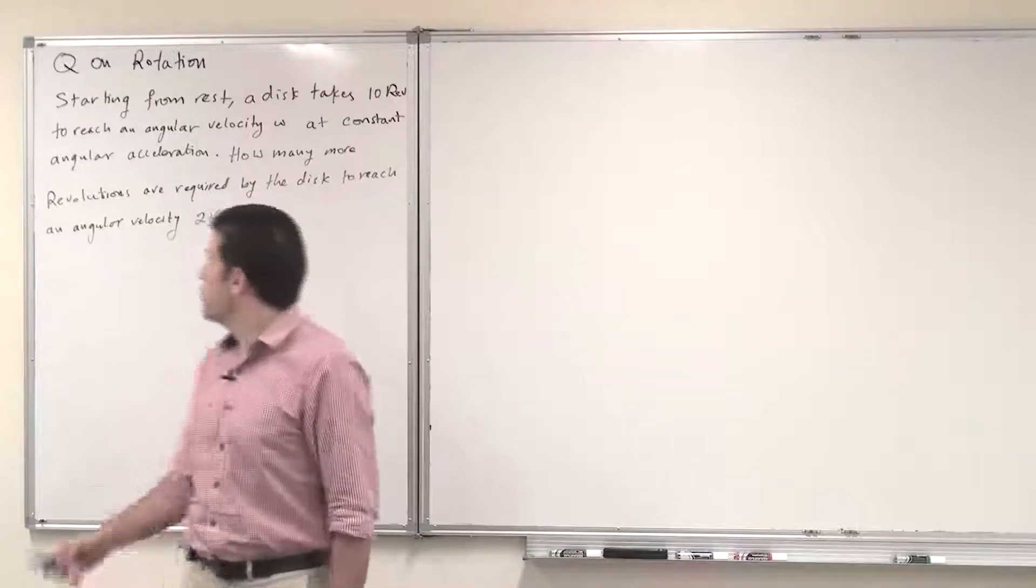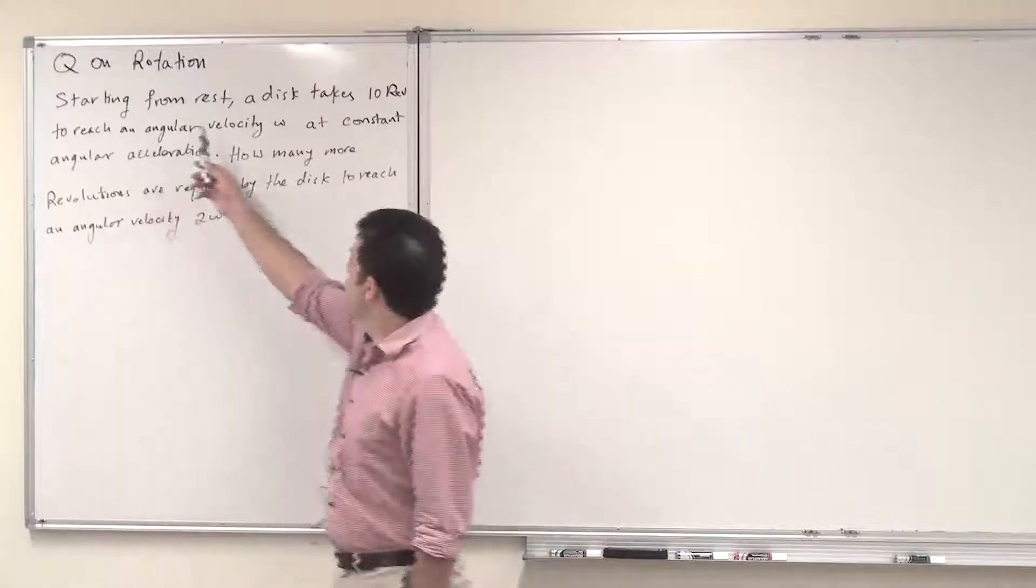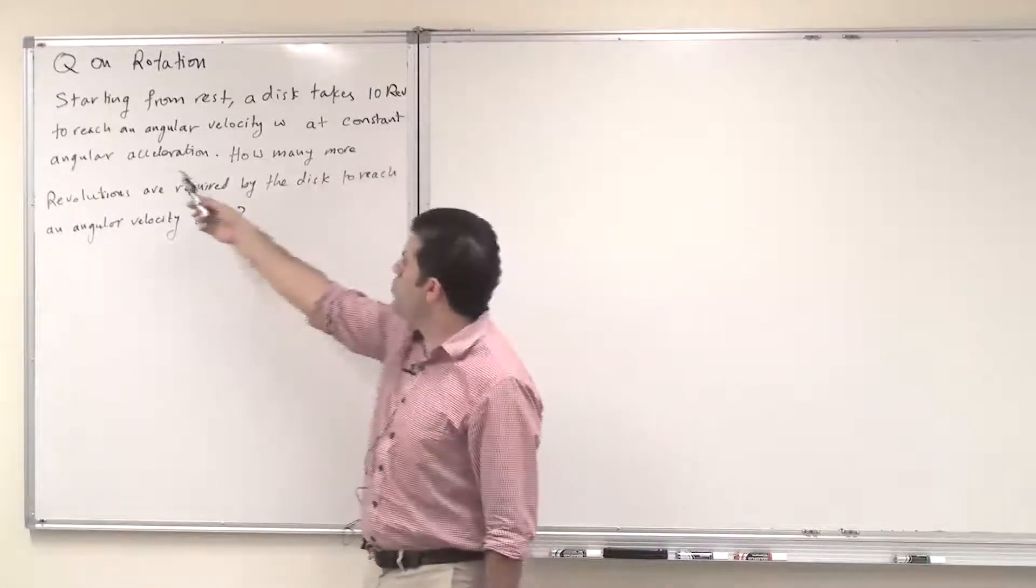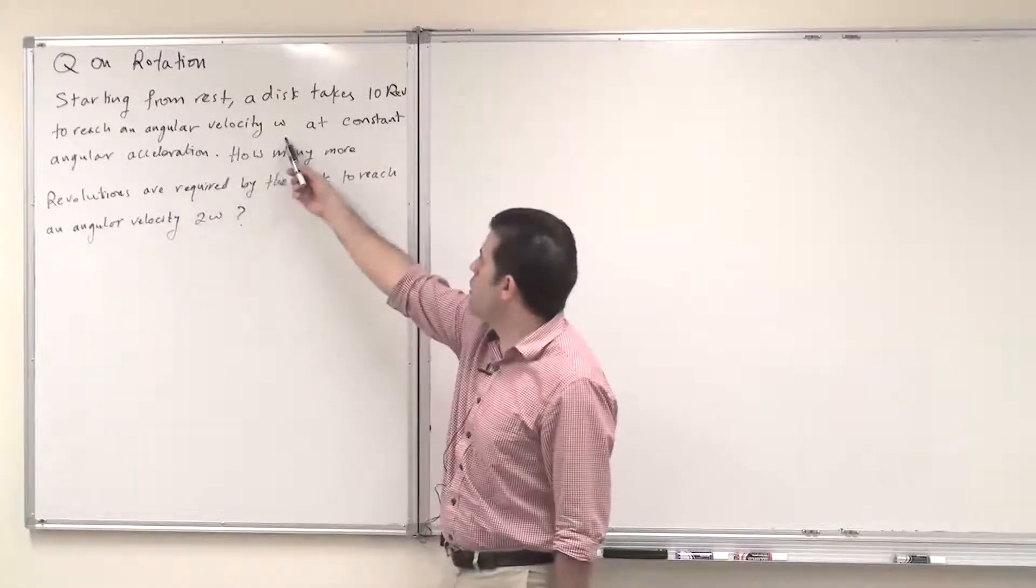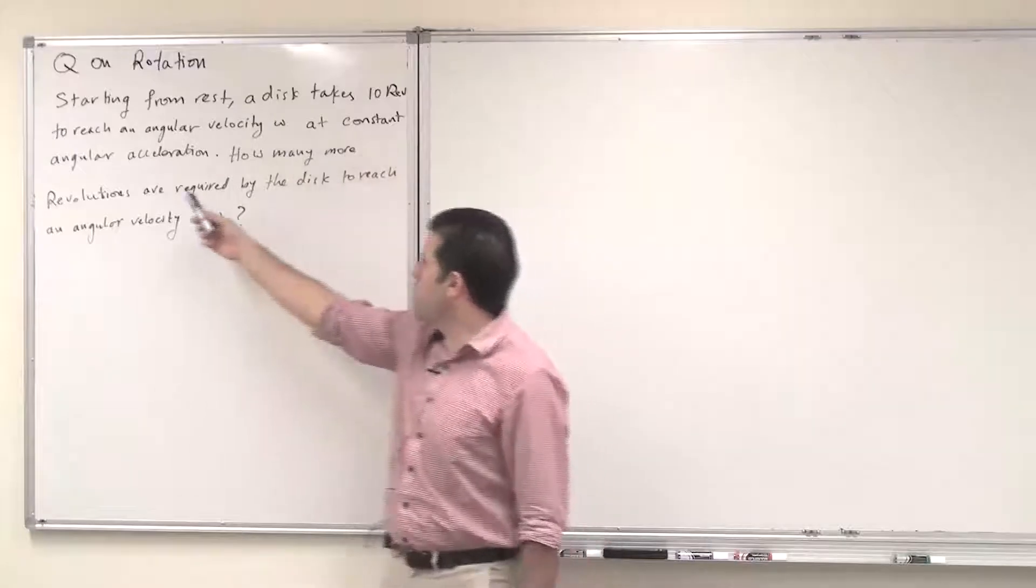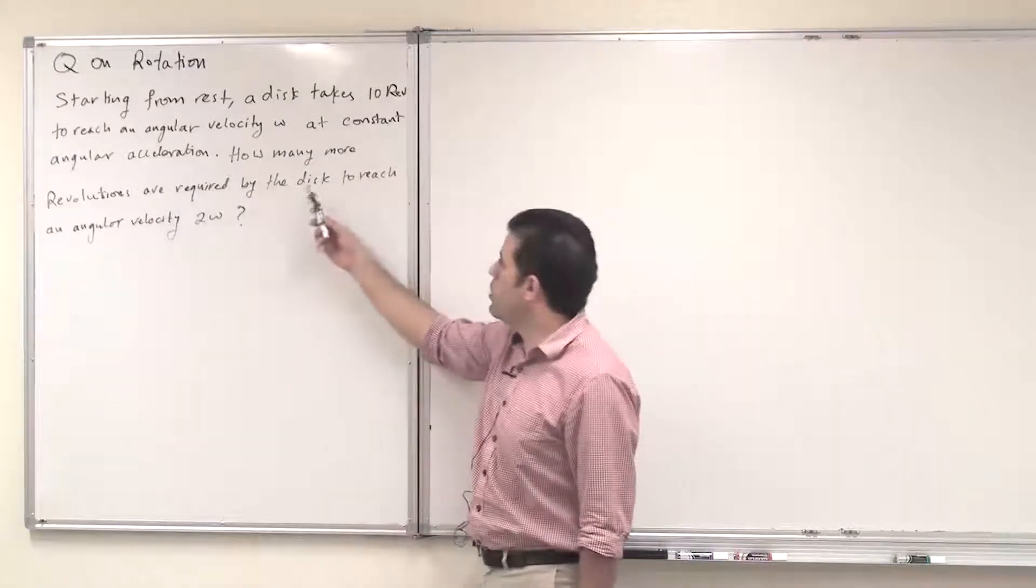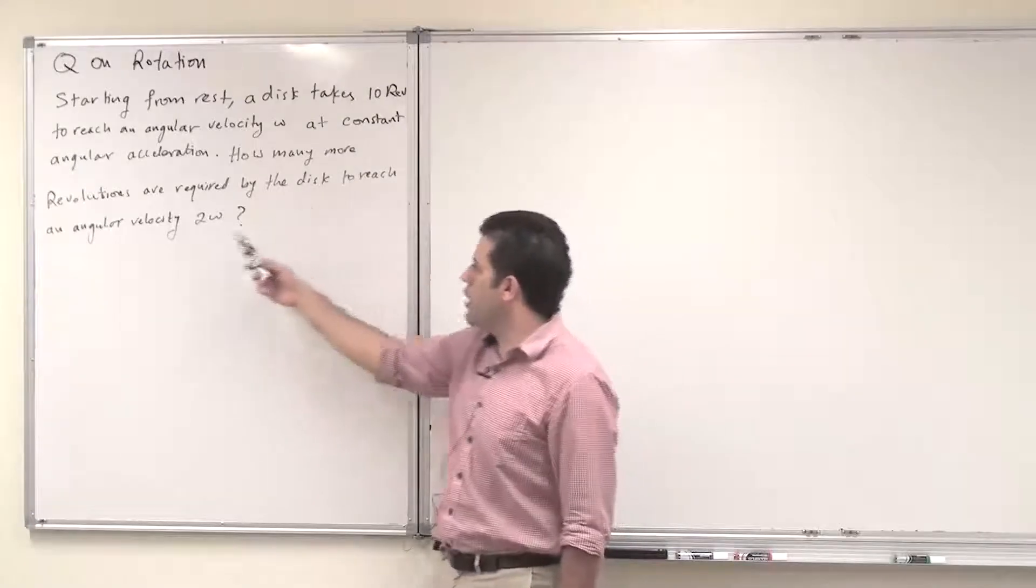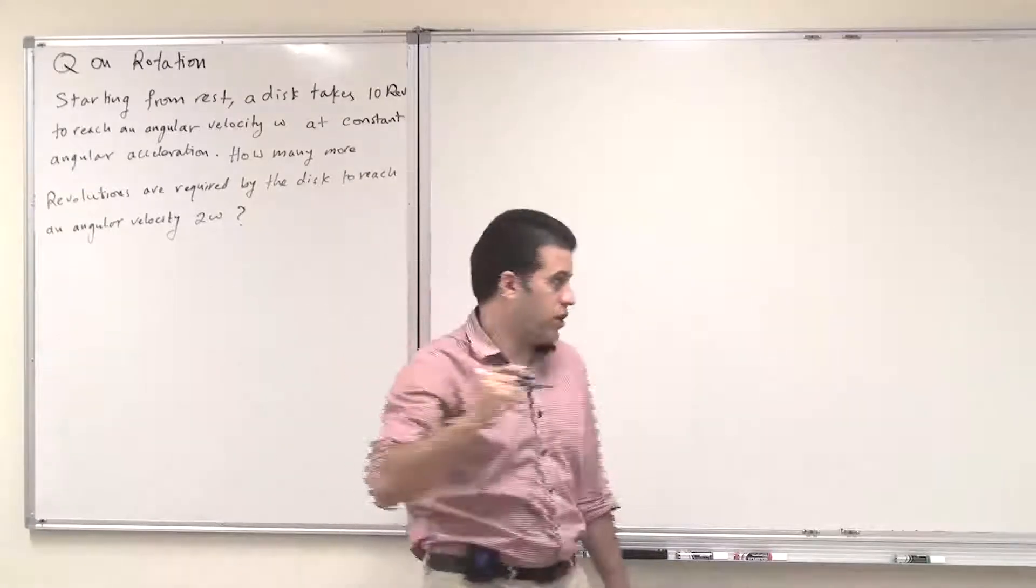Assalamu alaikum. This is a question on rotation. Starting from rest, a disk takes 10 revolutions to reach an angular velocity omega at constant angular acceleration. How many more revolutions are required by the disk to reach an angular velocity 2 omega?